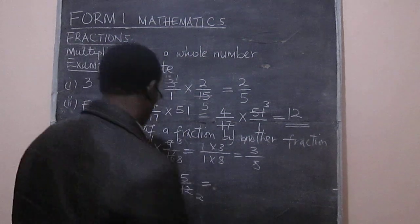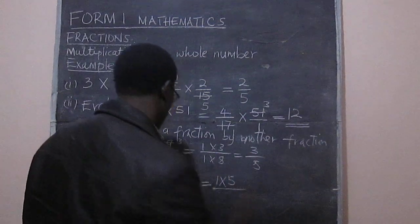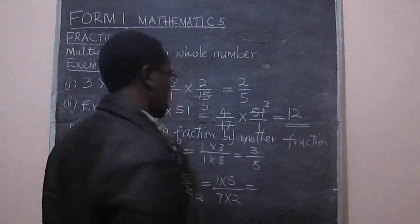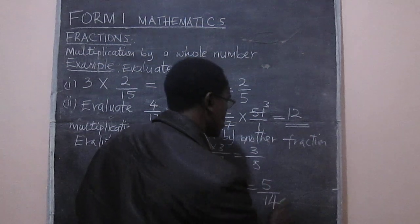And this gives us 1 times 5 divided by 7 times 2, and that gives us 5 over 14.